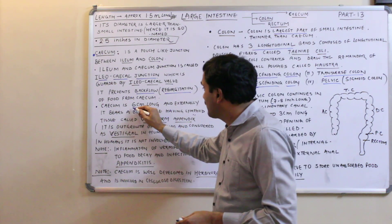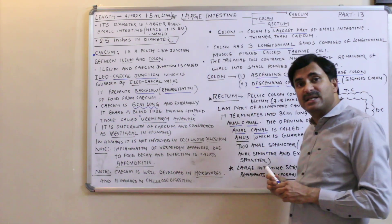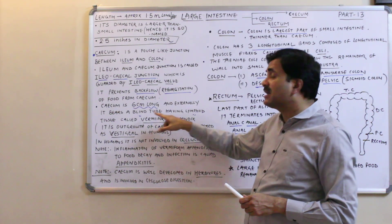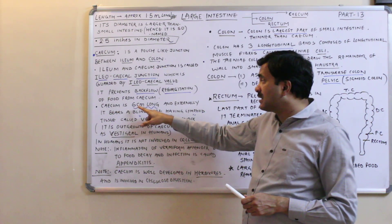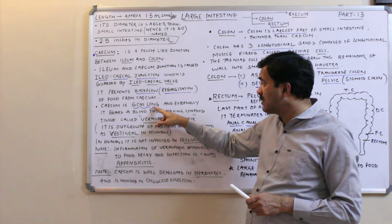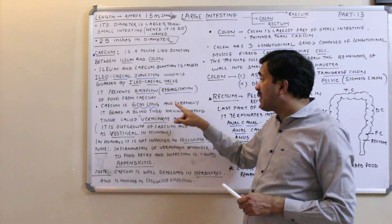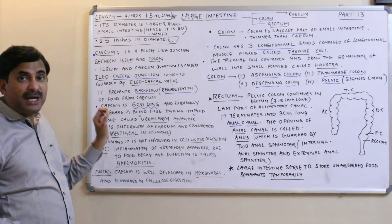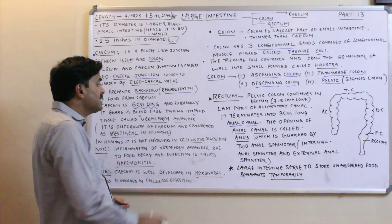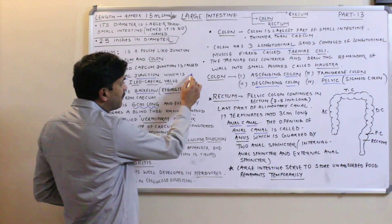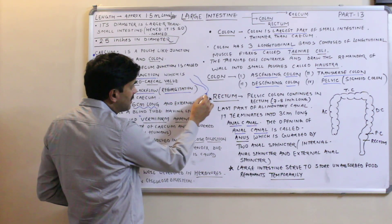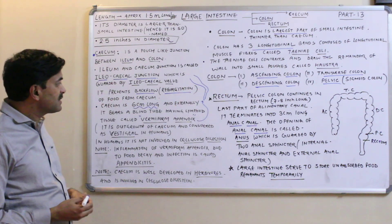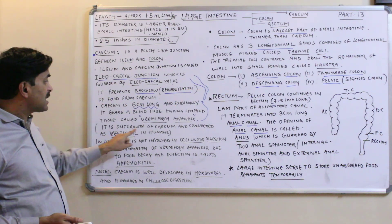The cecum is 6 cm long. Externally, it bears a blind tube containing lymphoid tissue, and this blind tube is called the vermiform appendix. The vermiform appendix is an outgrowth of the cecum.